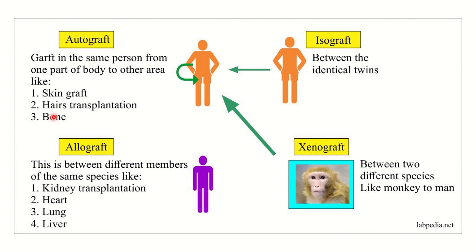Allograft means tissue collected from another person and given to someone of the same species — such as a kidney collected from one person and given to another human recipient. Examples of allografts include kidney, heart, lungs, liver, and other organs such as cornea or heart valves.